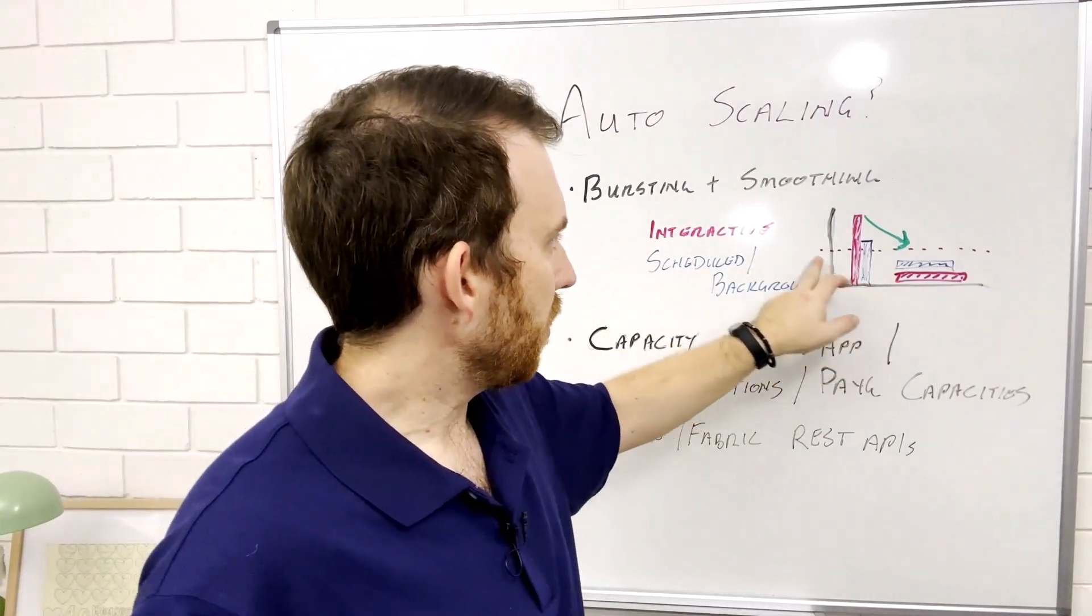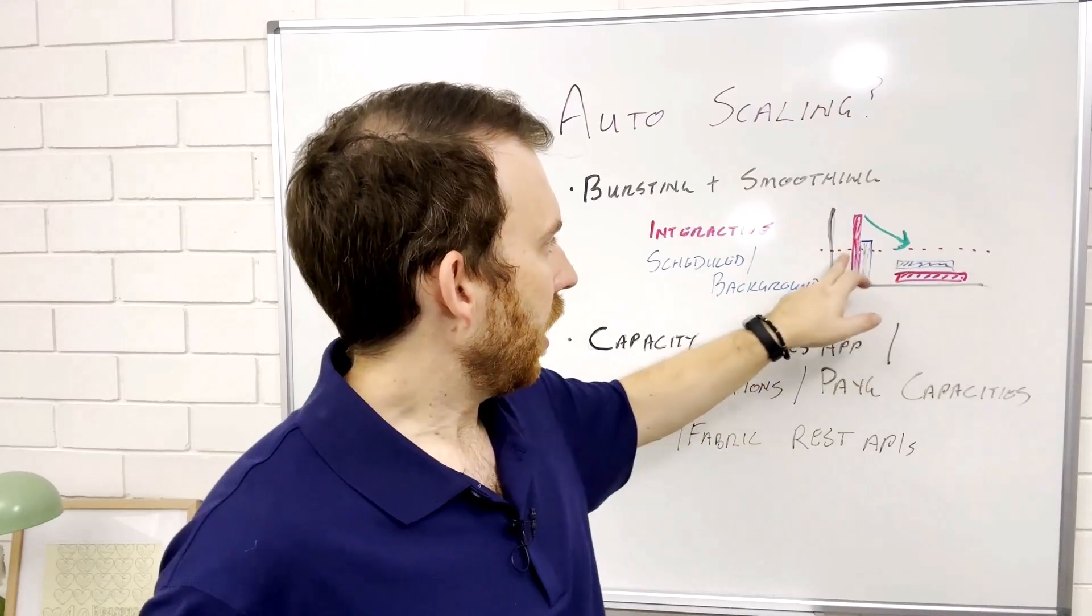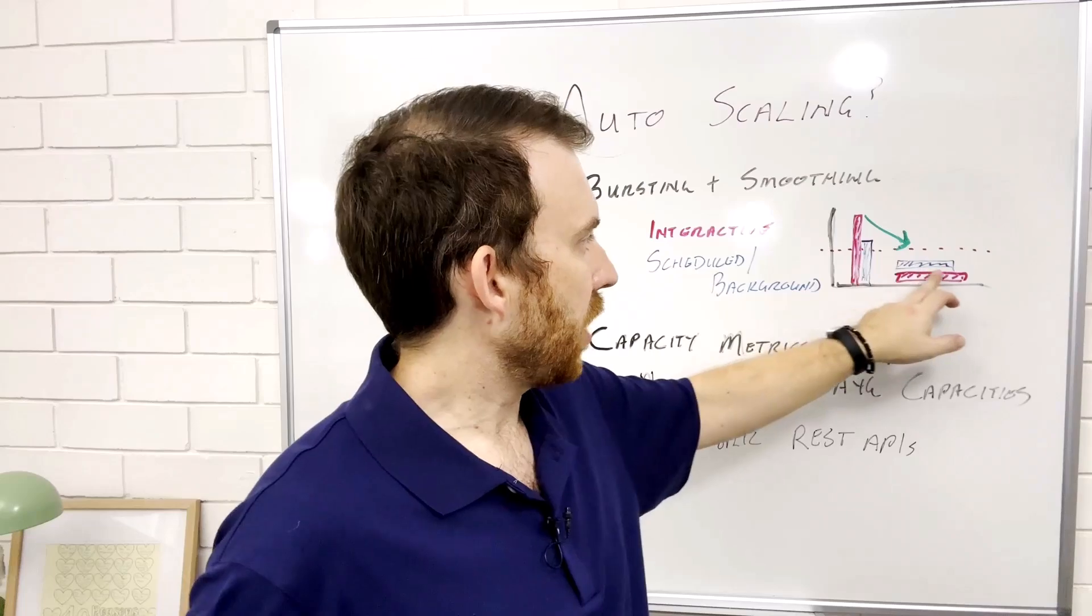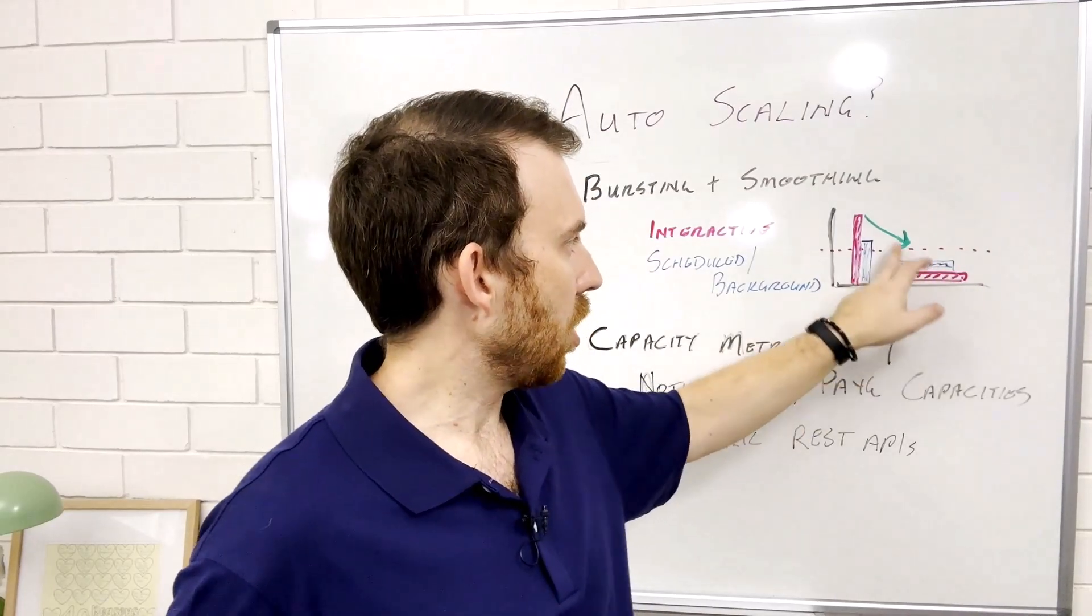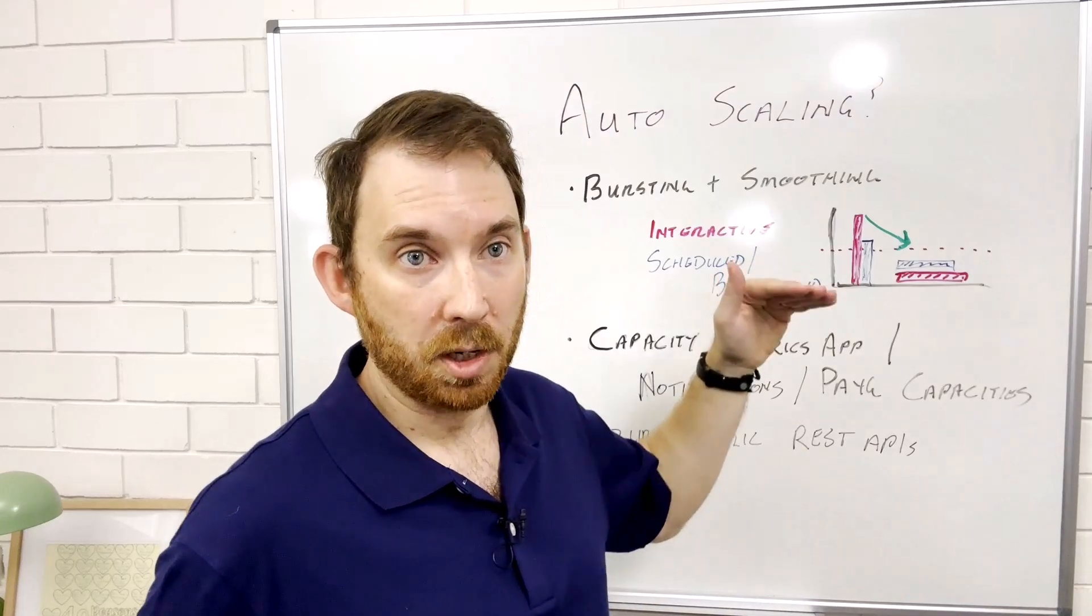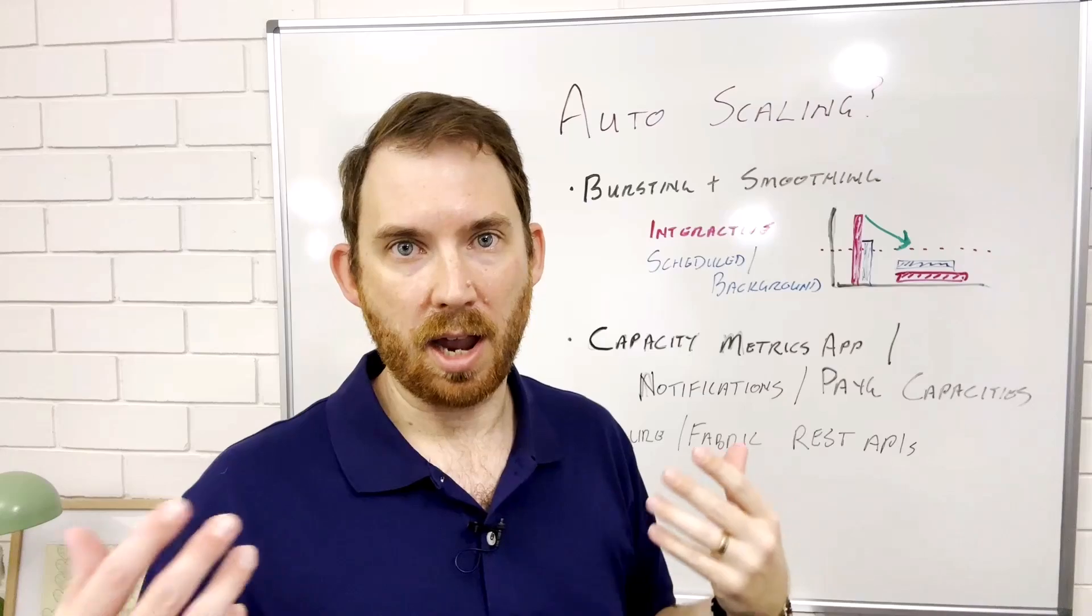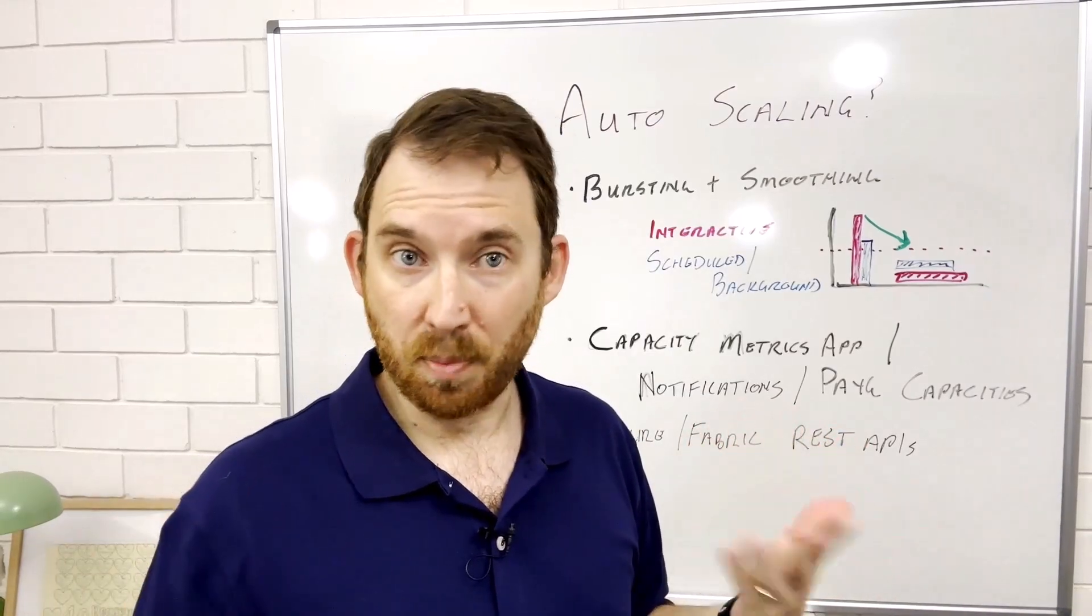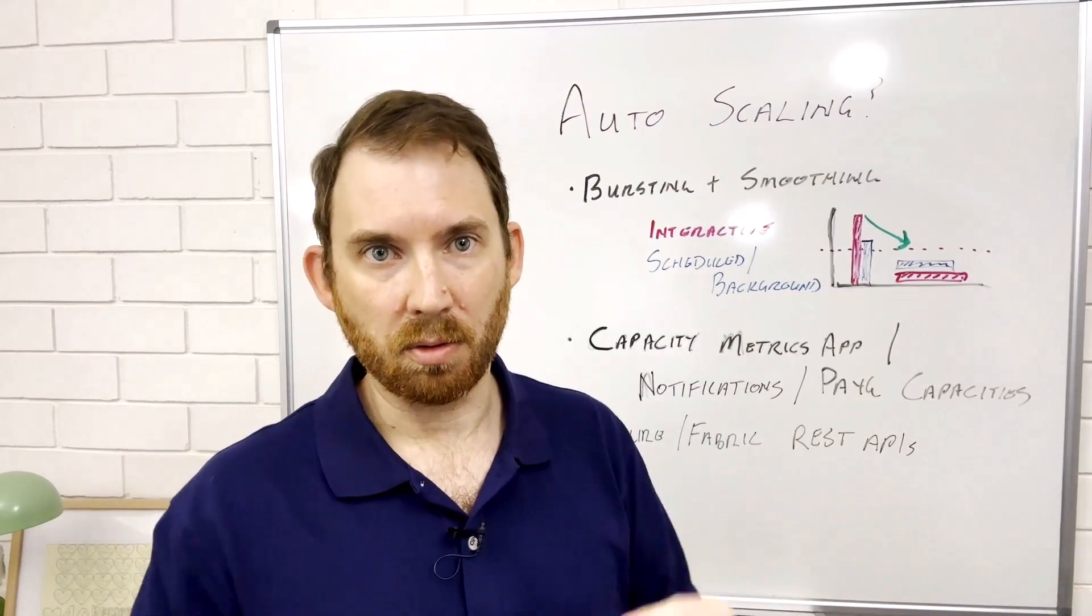So if you sort of think about this little line here is your capacity that you have and you've got these spikes that go up, if they get smoothed out over time then you're not going to exceed those limits or it'll manage that for you. So it allows you to have longer running tasks and spikes in usage without having to go refine and manage it.